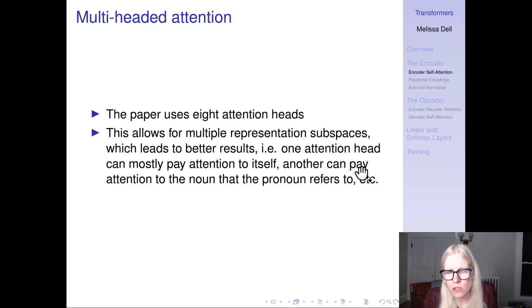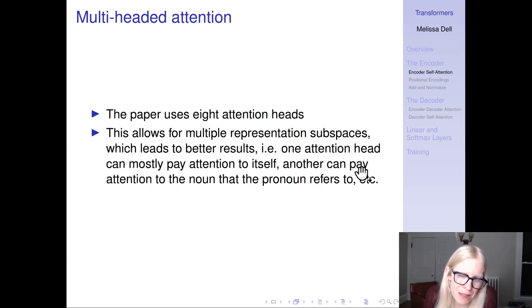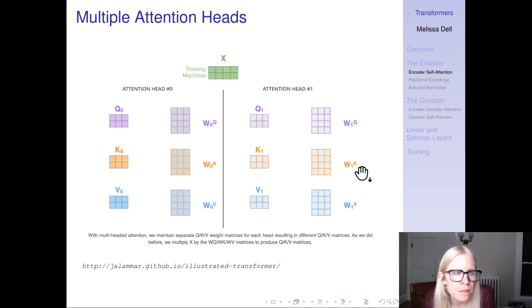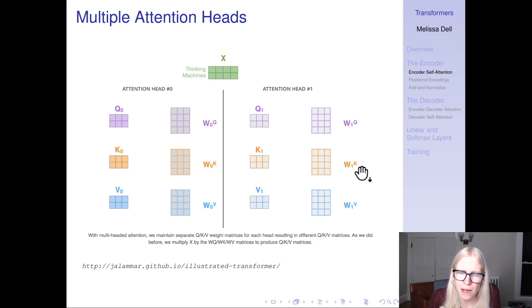The original transformer uses eight attention heads, and this allows for multiple representation subspaces, which leads to better results. One attention head can mostly pay attention to itself; another can pay attention to the noun that the pronoun refers to, et cetera. You have this input, and then you have these different attention heads. These weight matrices are learned parameters, and the model is going to be able to learn to attend to different things with the different heads.